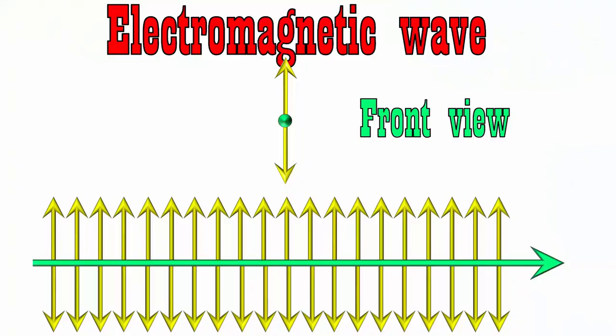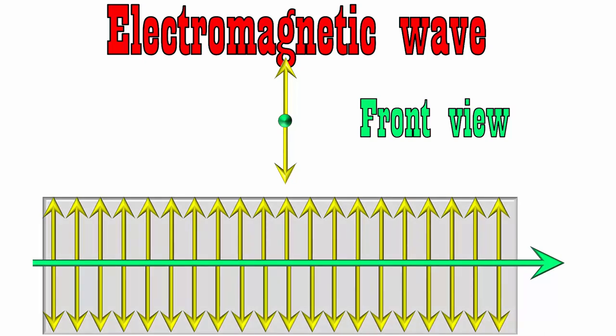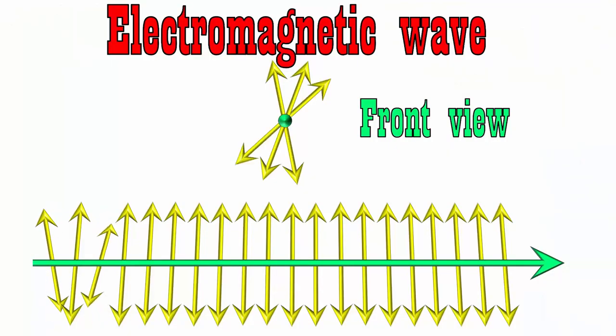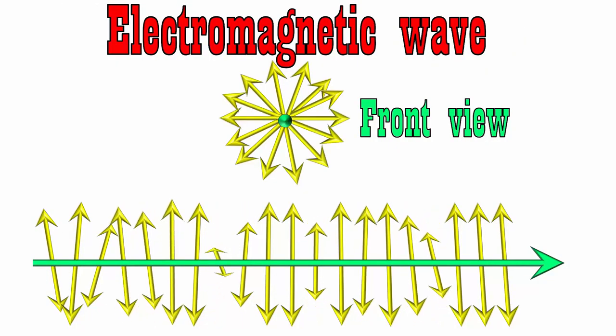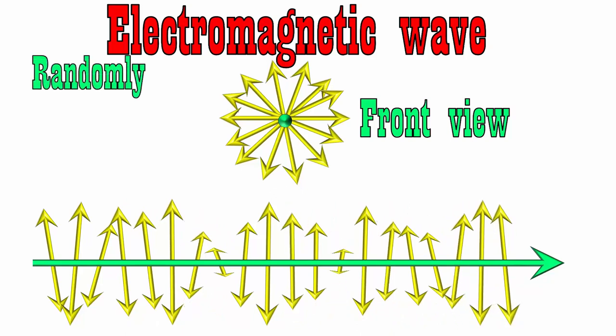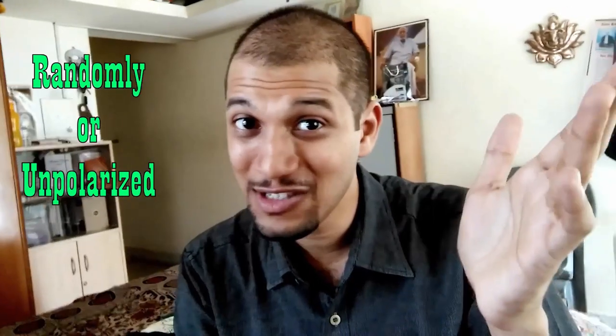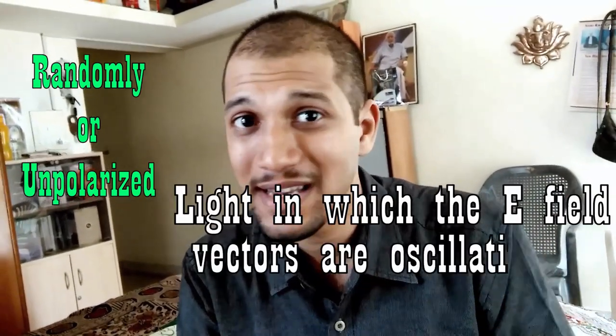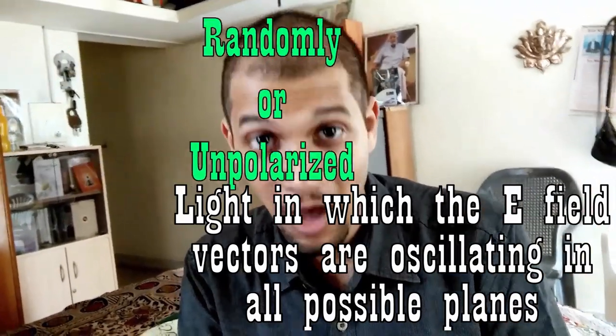What is polarization? In this picture, I've shown that all the electric field vectors are oscillating in the same plane. But there is no reason for them to do that — there are so many other planes in which they can oscillate: this one, or maybe this one, or that one. If you consider light from most common sources, you will see that the electric field vectors are oscillating in any possible direction, any possible plane — they're all randomly oriented. Such light is what we call randomly polarized, or unpolarized light. If someone asks you what unpolarized light is, you tell them: light in which the electric field vectors are oscillating in all possible planes.